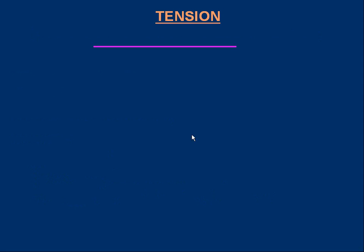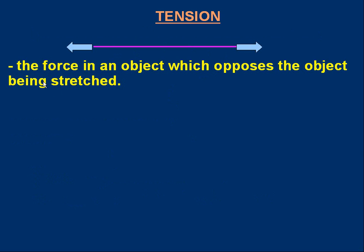Let's talk about tension first. There's a purple string. Now imagine grabbing hold of the ends of the string and stretching it. I'm sure you know from your experience that it's quite difficult to stretch a piece of string. And the force inside the string which resists stretching is tension. So if you want a definition of tension, we could say it's the force in an object — it doesn't have to be string, it can be anything — the force in an object which opposes the object being stretched.